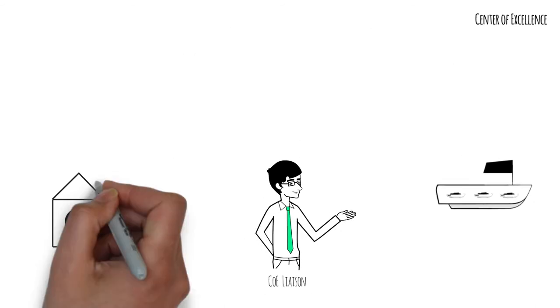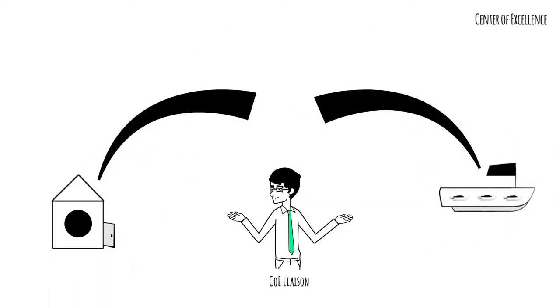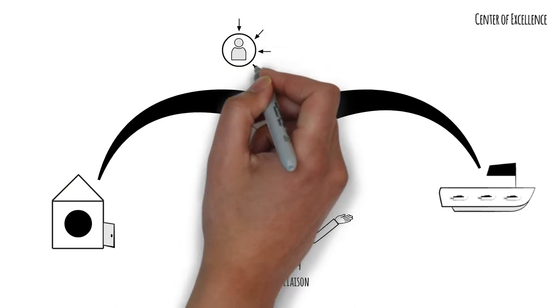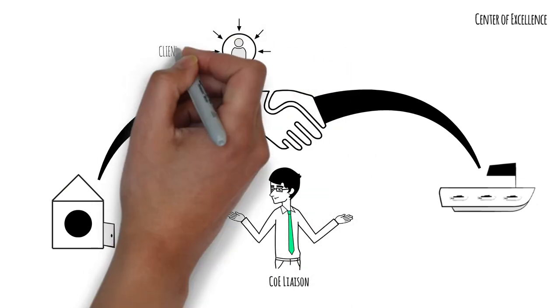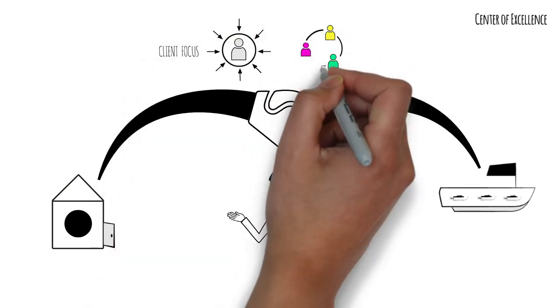Most importantly, the COE Liaison makes sure that the COE and the Tribe are aligned on what they'll deliver together, role-modelling the power of our ways of working by enabling higher levels of client focus and collaboration.